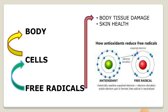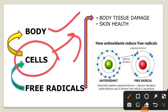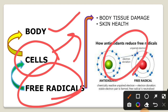Here we discuss free radicals. Free radicals, for example, have an unpaired electron. For complete electrons in a healthy cell, free radicals have an unpaired electron, which makes them unstable and reactive.